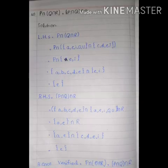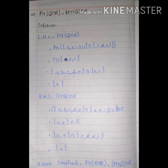Part number 3: P intersection (Q intersection R) equals (P intersection Q) intersection R. We have to verify the left and right sides. First of all, we will solve the left-hand side bracket first.